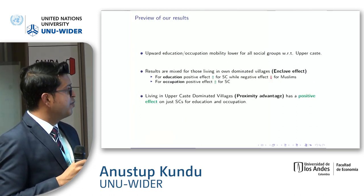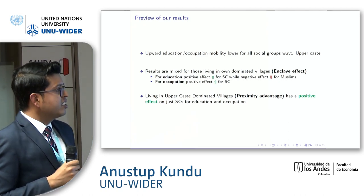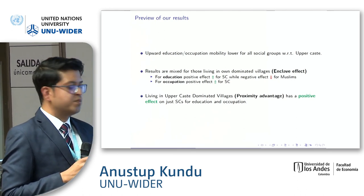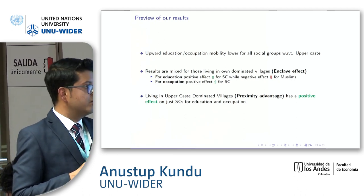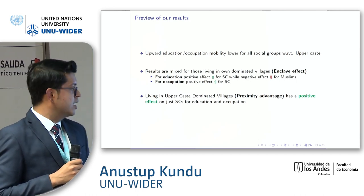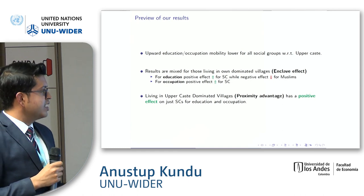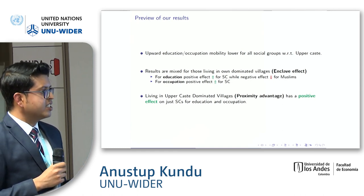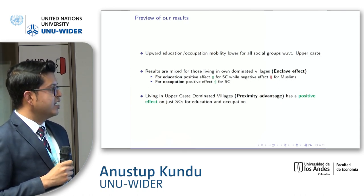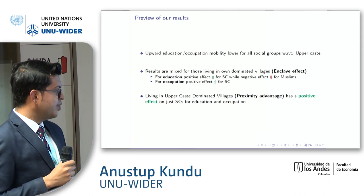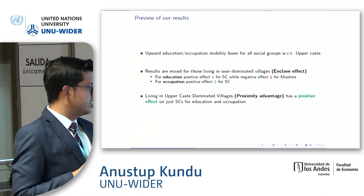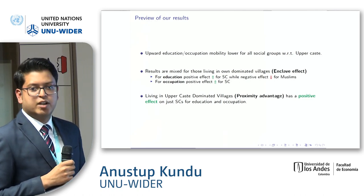As a quick preview: we find upward education and occupational mobility is lower for all social groups — by social groups I mean Scheduled Caste, Scheduled Tribe, Other Backward Caste, and Muslims — in comparison to upper caste. For the enclave effect the result is mixed: for education there is a positive effect for Scheduled Caste but negative for Muslims. For occupation there is only a positive effect for Scheduled Caste. Living in an upper caste dominated village — the proximity effect — has a positive effect for Scheduled Caste for both education and occupation.